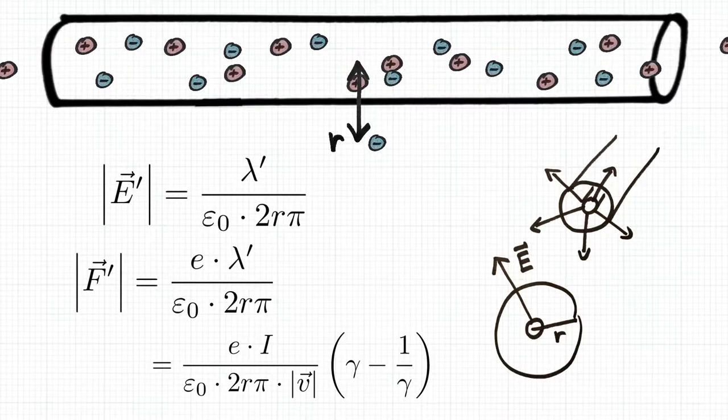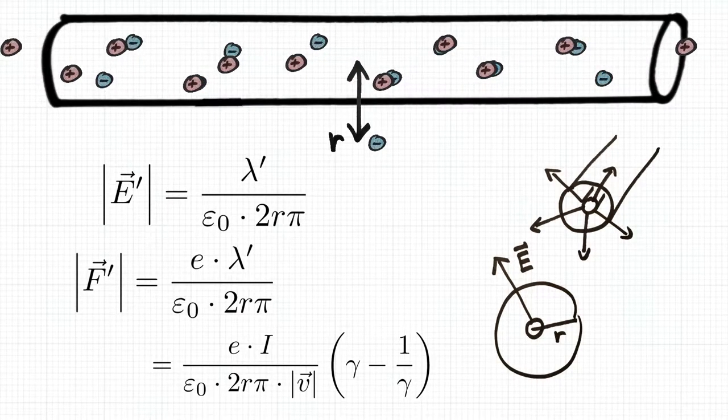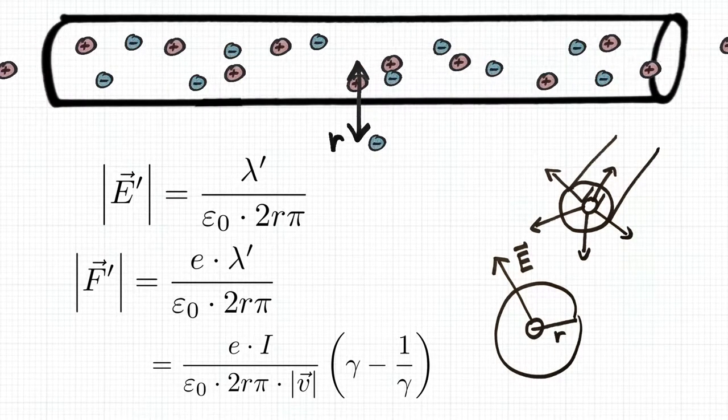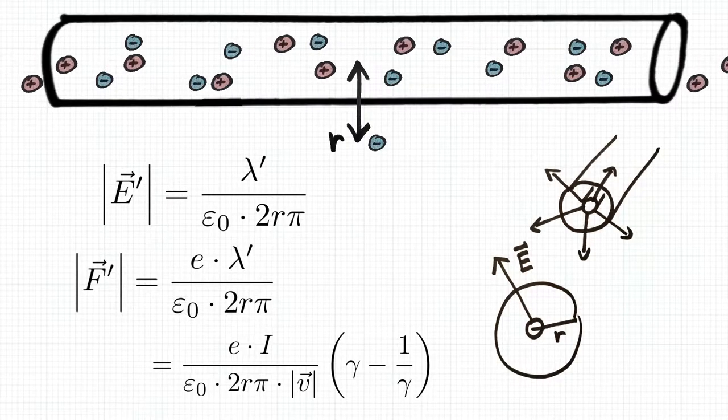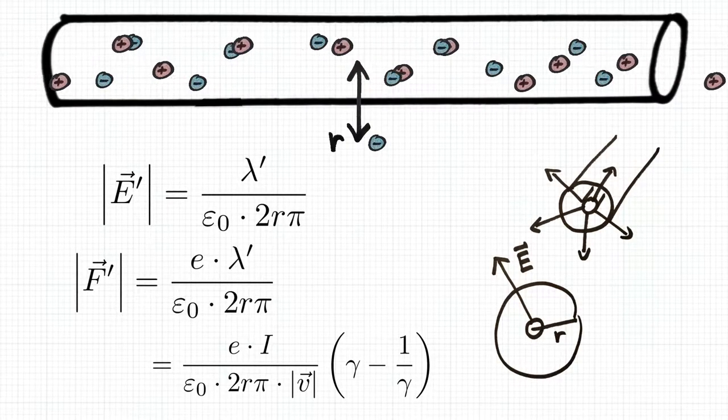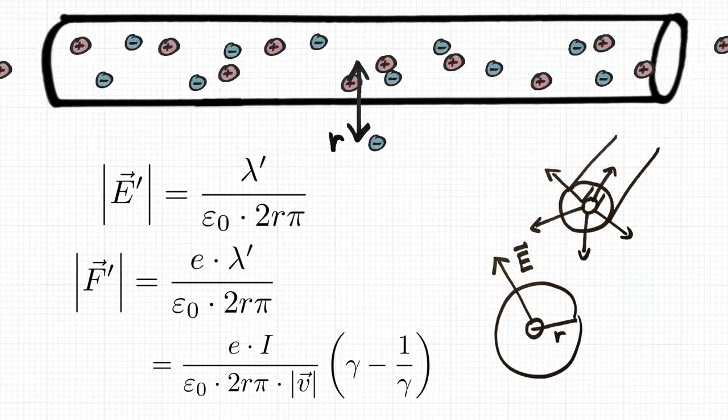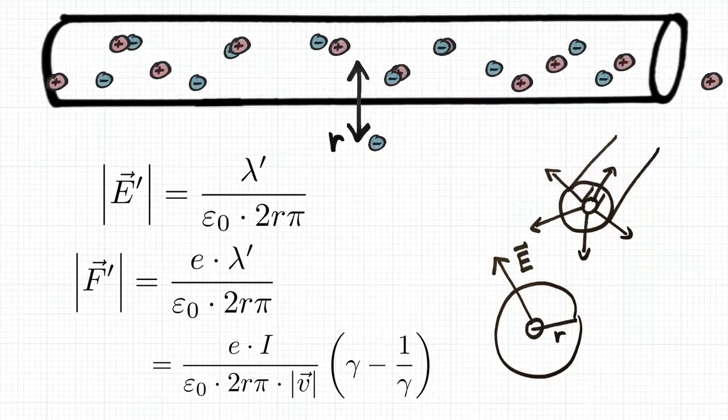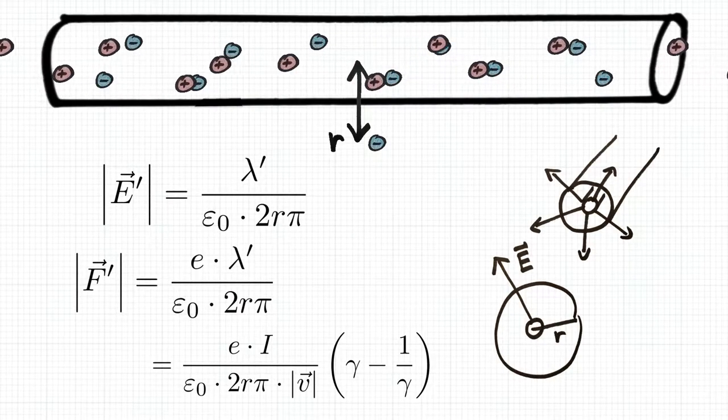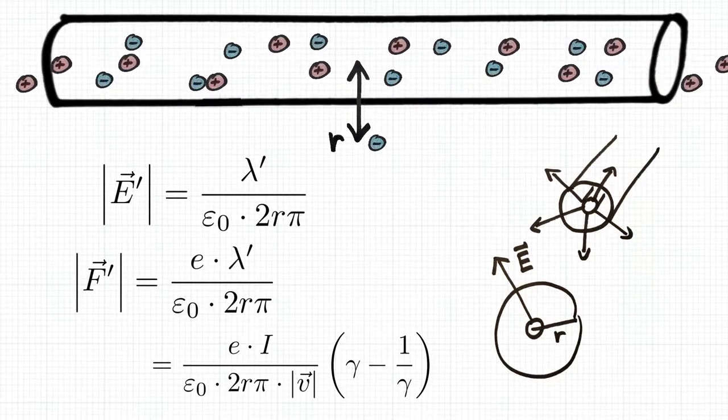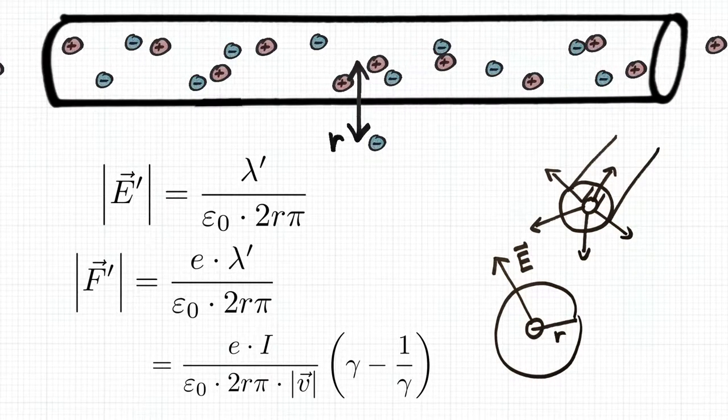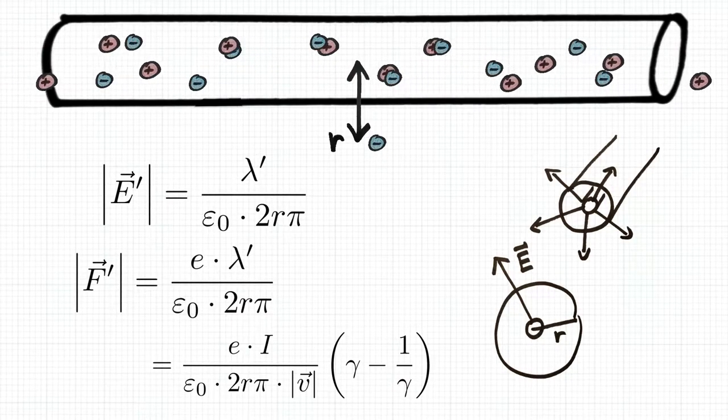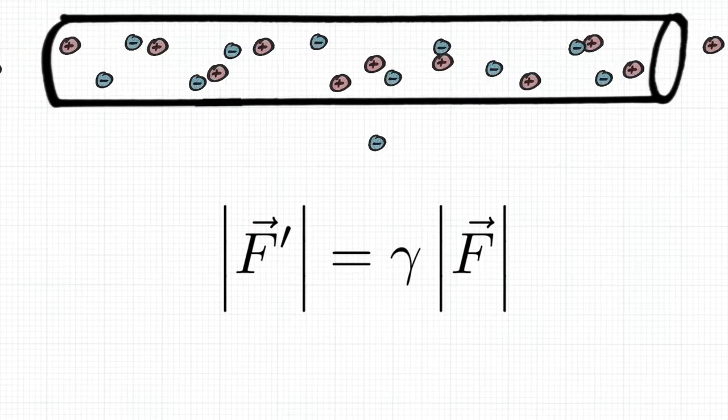Now there is a final catch that we have to be careful about. We cannot simply equate f prime and f. They are the forces that observers in the unprimed and primed frame of reference see acting on the electron. But like different observers report different lengths of the same object, they also perceive forces differently. The forces are perpendicular to the relative velocity that separates our frames of reference, so length contraction cannot play a role in that. So why are the forces different? It has to do with time dilation, and it will turn out that f prime equals gamma f.